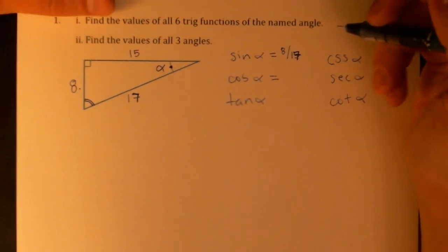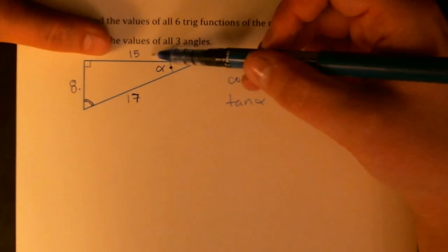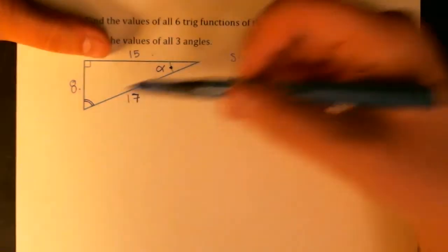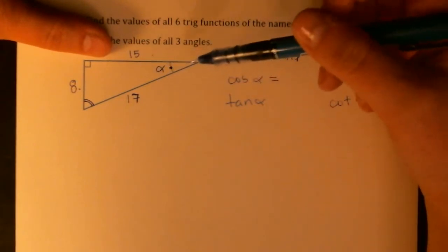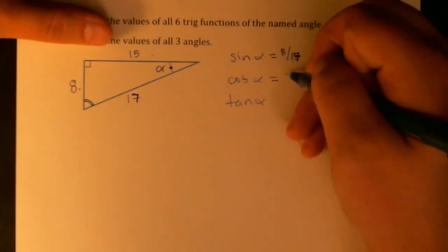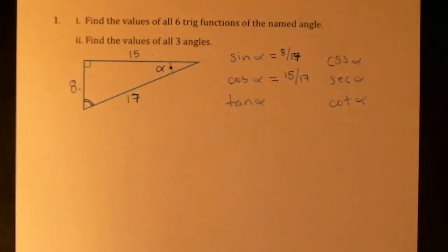Cosine alpha, again, hopefully just from our memory, cosine alpha is adjacent over hypotenuse. So hypotenuse should be clear. Adjacent is going to be the other side that does actually touch angle alpha. So adjacent over hypotenuse is 15 over 17.